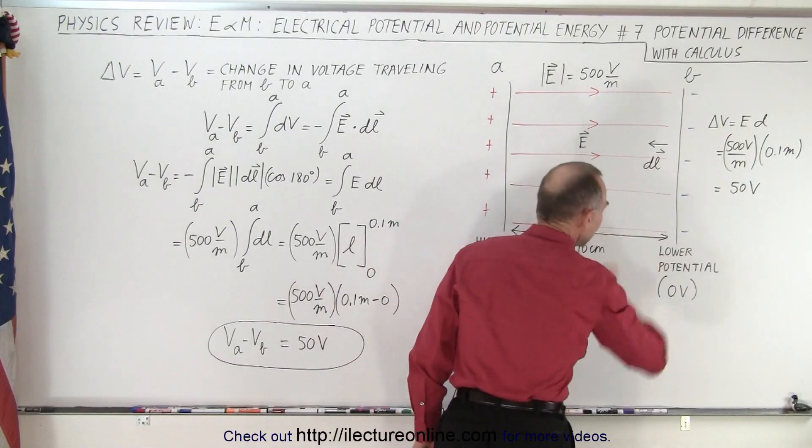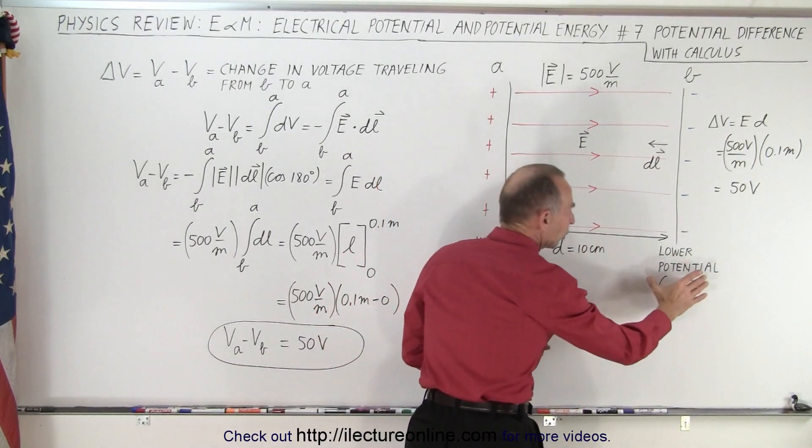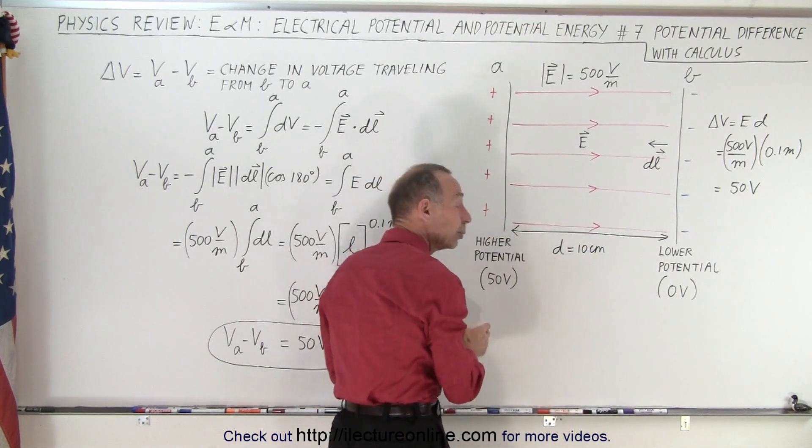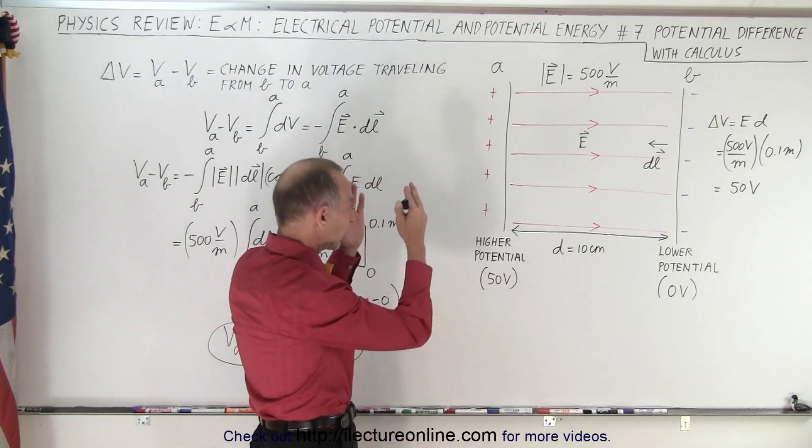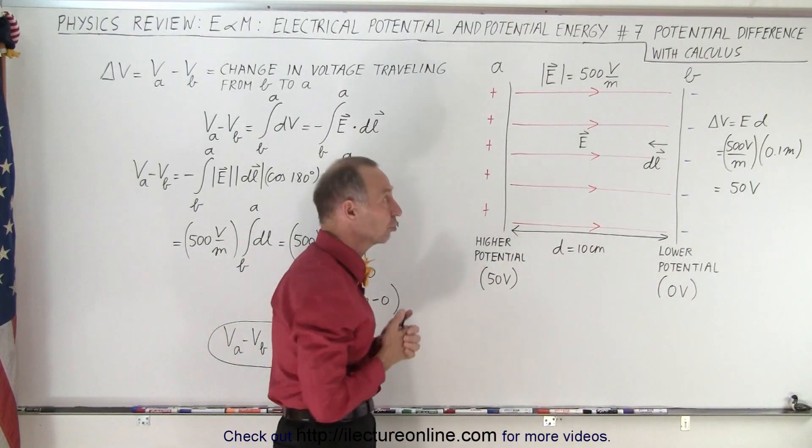The electric field is directed from positive to negative. And so that means then that on the negative side we have a lower potential and on the left side here on the positive side we have a higher potential and that simply makes sense. Positive is associated with higher potential, negative is associated with lower potential.